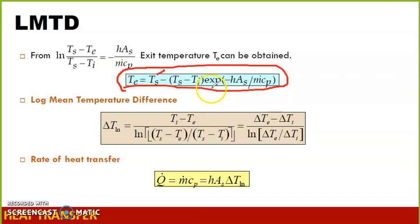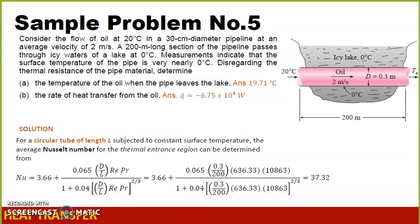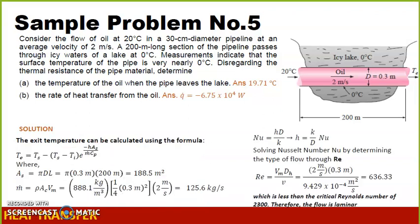Multiplied by e to the power of the negative of H, the surface area, the mass flow rate, and the CP. So we can get the value of exit temperature. So going back.